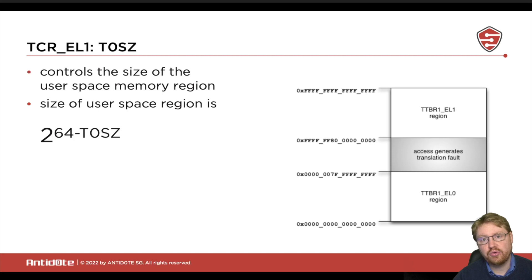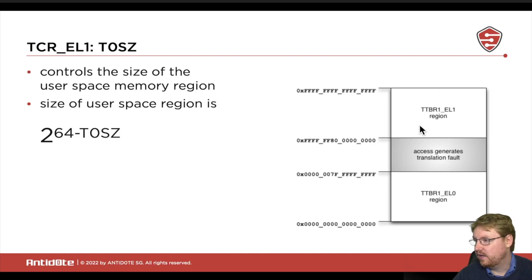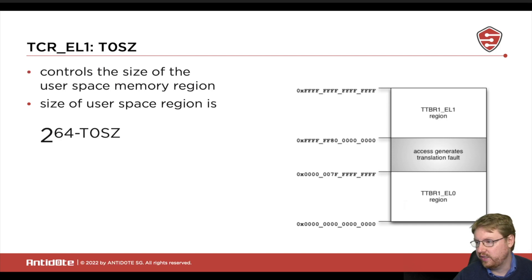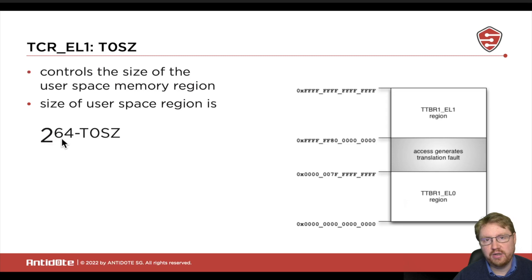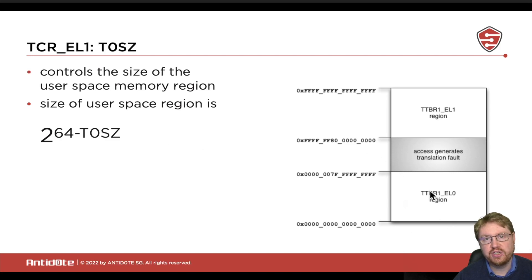The next thing controlled by this value is the T0SZ field, which determines how big the user land address space is. As you can see here, we have a kernel address space, a user land address space, and in between is all un-paged memory. The value in T0SZ specifies the size of the user space region, as given by the formula 2 to the power of (64 minus whatever this field is).